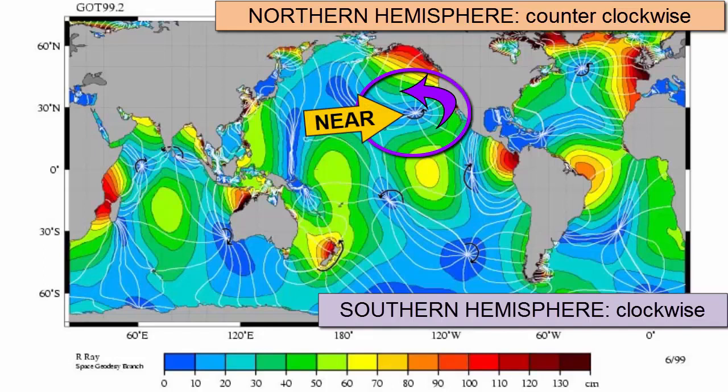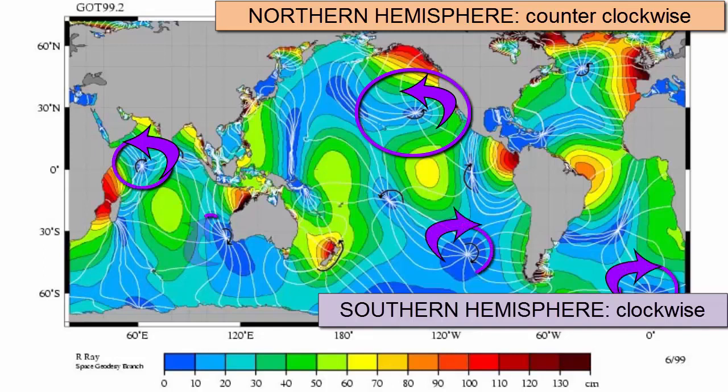Areas with the largest tidal range can be found further away from the amphidromic points and those with the least tidal range are closest to them. There are many amphidromic systems across the world's oceans produced by the varying shapes of the ocean basins and the configuration of continents and islands.